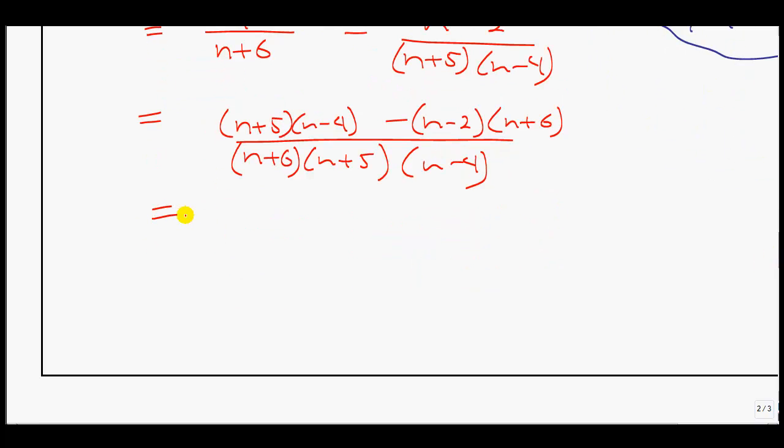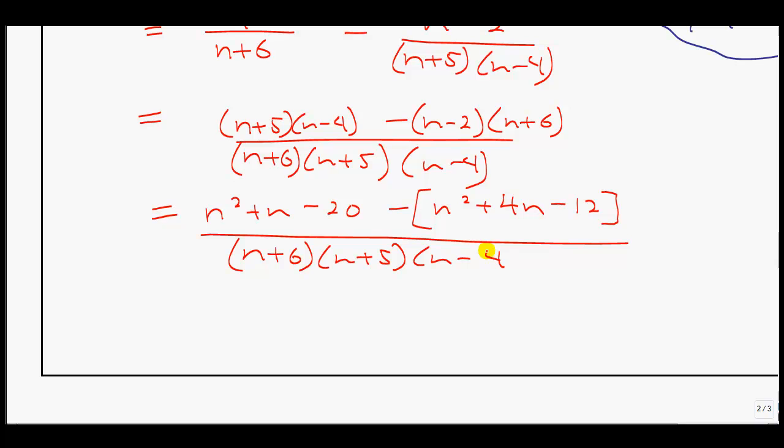Now I'm going to distribute these out. I have n times n, that's n squared. I have a negative 4n and a 5n that gives me 1n. And then this will be minus 20. I'm going to leave the negative right here because the negative is essentially applied to both these brackets. n times n is n squared. n times 6 is 6n, and a negative 2n gives you a positive 4n minus 12.